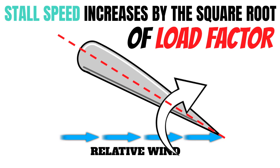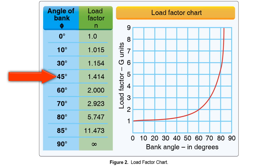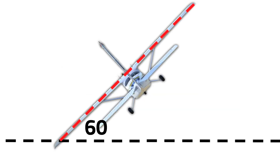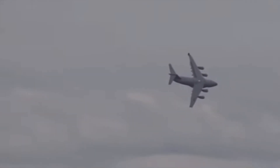You won't need the stall speed formula for the written exam, but it's something you should really know how to do. In order to maintain level flight during a 45-degree bank turn, you have to pull 1.414 Gs. You can calculate the stall speed of your airplane in a turn so you know a safe airspeed when banking up to 60 degrees. Extreme bank angles have killed many pilots for this very reason, so it's important to know about this.